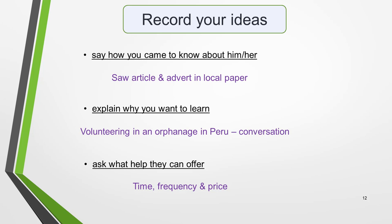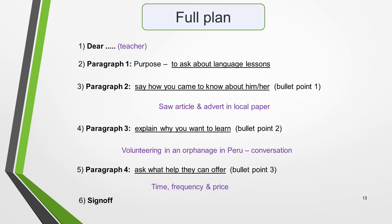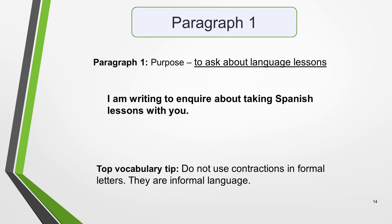We're now ready to start writing our letter. Here's our plan again with all our notes added in. We've already decided on the greeting, so we'll start by writing paragraph 1. In the first paragraph, you must state the reason for writing the letter — its purpose — which is to ask about language lessons. Many students make the mistake of missing this purpose sentence out, but it's very important — including it will gain you marks. It only requires one sentence. Here's a top vocabulary tip: do not use contractions in formal letters, as they are informal language. So do not write 'I'm writing to enquire.'